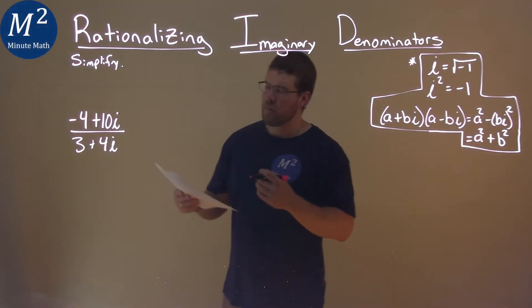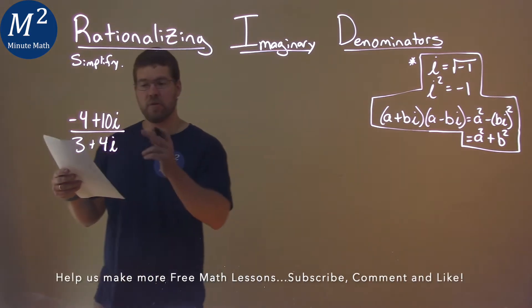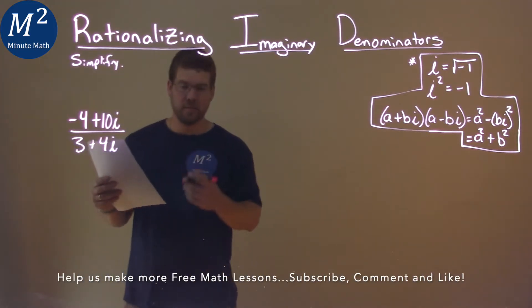We're given this problem right here, negative 4 plus 10i over 3 plus 4i, and we've got to simplify this.